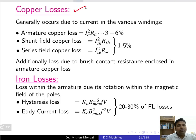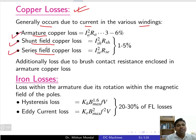First we will see the copper loss. Copper loss generally occurs due to current in the various windings. Loss can occur in the armature copper, shunt field copper, and series field copper. Armature copper loss is given as I²R — specifically Ia²Ra using armature resistance and armature current. This includes 3 to 6 percent of the total loss.